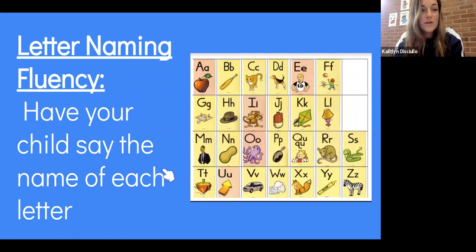So the first activity you can do at home is letter naming fluency. Have your child say the name of each letter. So if you have these letters in front of you, you can go through them and say their name. They can be in order or you can mix them up to make it a little harder.